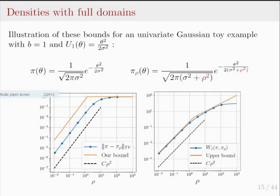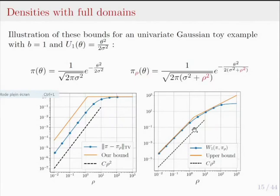As an illustration of the tightness of these bounds, consider a univariate Gaussian toy example. Performing the Gaussian smoothing operation on a Gaussian density simply inflates the variance by a factor of rho squared. Comparing explicit forms of the total variation and Wasserstein distances shows we achieve the optimal slope of rho squared, confirming that these bounds are optimal with respect to rho.